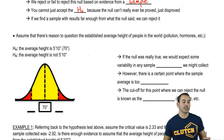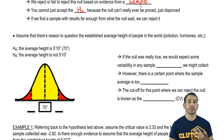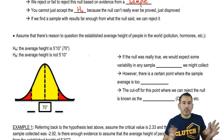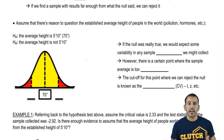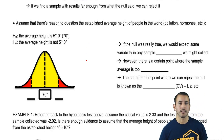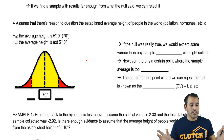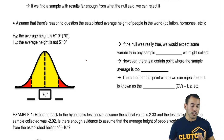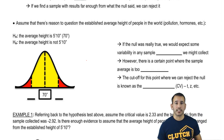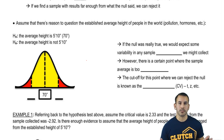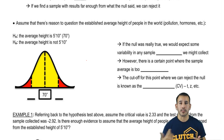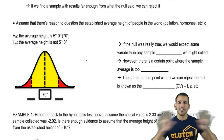Assume there's reason to question the established average height of people in the world — maybe due to increased pollution, hormones in food, whatever the case may be. The null is that the average height is what it was established to be — maybe from a census 20 years ago establishing 70 inches in the United States. The alternative, in this case, is that it's not 510 — we're not specifying greater than or less than, just that it's different.